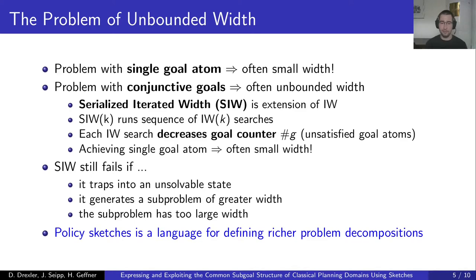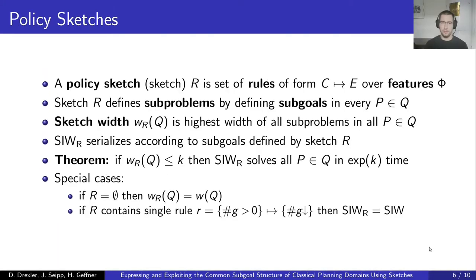Policy sketches is a language for defining richer problem decompositions. A policy sketch, often denoted R, is a set of rules of the form C→E over features phi, where C is a set of feature conditions and E is a set of feature effects. A sketch R defines sub-problems by defining sub-goals in every problem p in a class Q. Notice that we are now using a whole class of problems Q over some common domain, so a sketch aims at solving a whole class of problems. The sketch width w_R(Q) is defined as the highest width of all sub-problems in all problems p in Q.